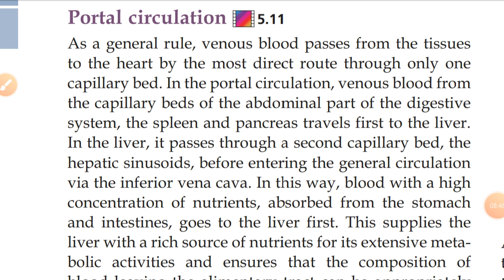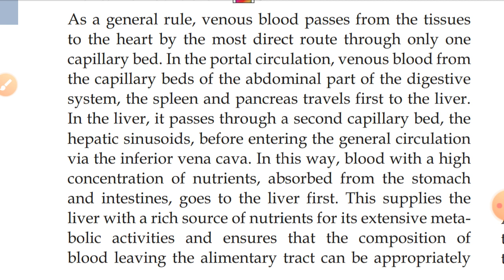As a general rule, venous blood passes from the tissue to the heart by the most direct route through only one capillary bed. In the portal circulation, venous blood from the capillary bed of the abdominal part of the digestive system, the spleen, and the pancreas travels first to the liver. In the liver, it passes through a second capillary bed — the hepatic sinusoids — before entering the general circulation via the inferior vena cava. In this way, blood with a high concentration of nutrients absorbed from the stomach and intestine goes to the liver first, supplying it with nutrients for its extensive metabolic activity.